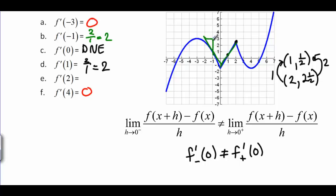At negative 1, we should have had a point of negative 2, 3 and a point of negative 1, 1.